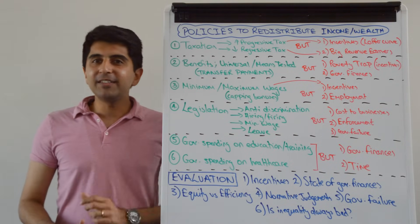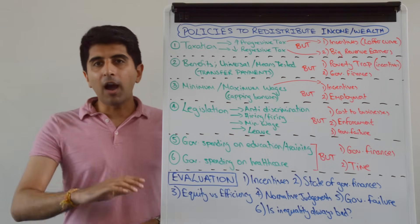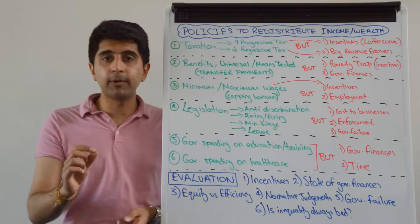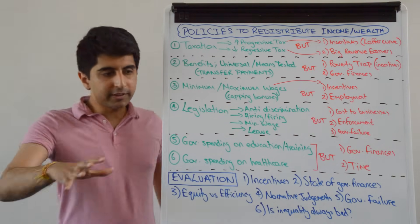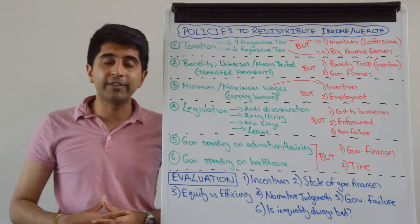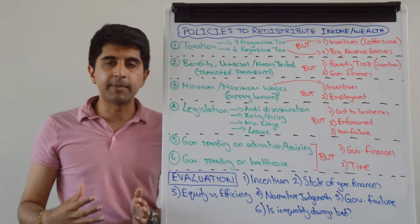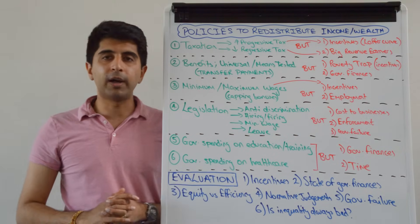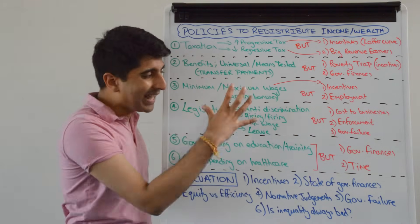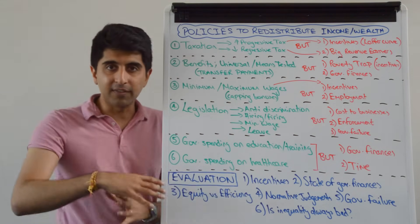Hi everybody. Government intervention in labour markets is often based on the grounds of equity, i.e. that free labour markets can end in unequal distributions of income and wealth and in poverty. So when governments intervene in labour markets they do so to redistribute income and wealth and to reduce poverty. In this video we're going to look at all the policies available to governments to help redistribute income and wealth, but also looking at the counter arguments and the arguments against some of these policies before finishing with key evaluation points to this big debate.